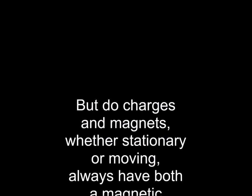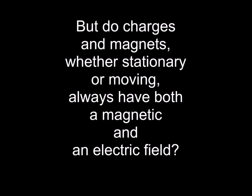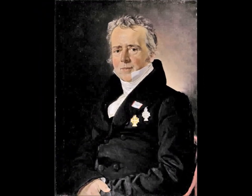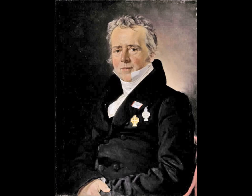But do charges and magnets, whether stationary or moving, always have both a magnetic and an electric field? The effect of electric current on magnets was discovered in 1802 by Domenico Romagnosi, then again highlighted by Christian Oersted in 1820, who left his name to this experiment. A compass needle is deflected by an electric current. Oersted's experiment is an indisputable experimental fact. Since then, everything seems to flow together with perfect logic, especially with the discovery of the electron.